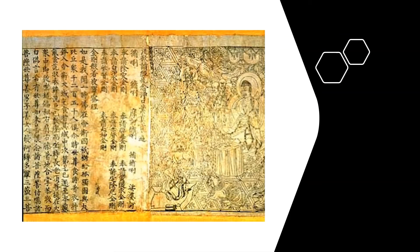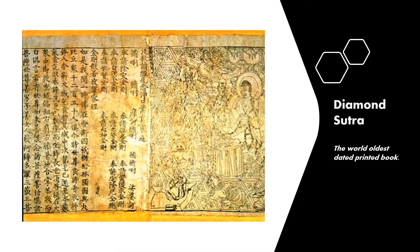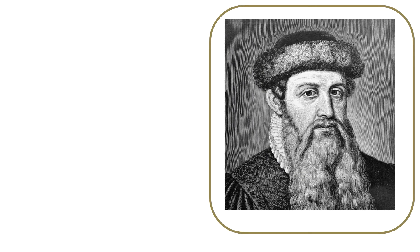As the popularity of books was increasing, the world turned to a more efficient way of making them — printing. The world's earliest printed book is the Diamond Sutra, and although the exact date it was made is uncertain, it has been thought to have been created between the second and fifth centuries.